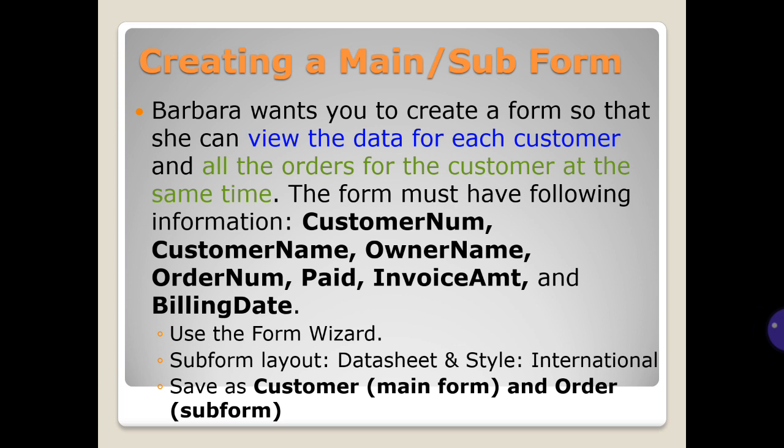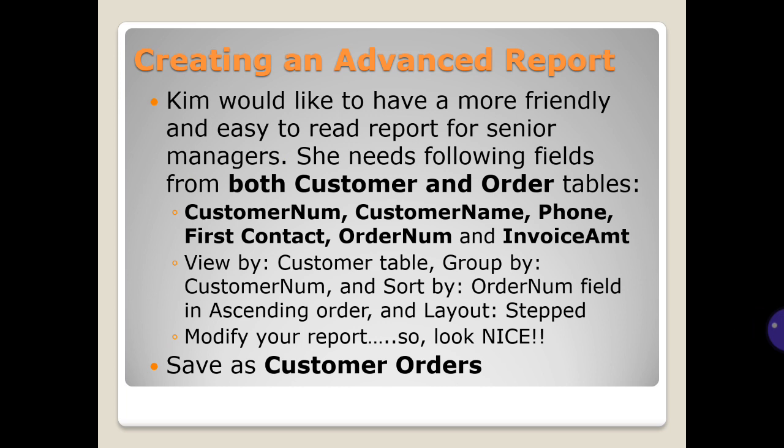Save as 'customer main form' and 'order sub form'. Creating an advanced report: Kim would like a more friendly and easy-to-read report for senior managers. She needs the following fields from both the customer and order tables: customer number, customer name, phone, first contact, order number, and invoice amount. View by customer table, group by customer number, sort by order number in ascending order, with layout stepped. Modify your report to look nice and save as 'customer orders'.